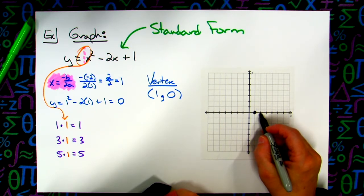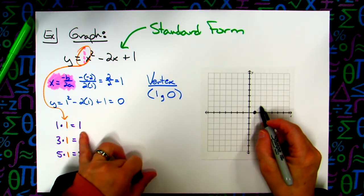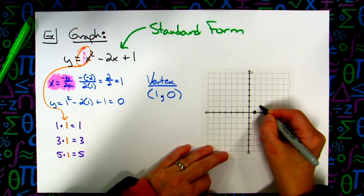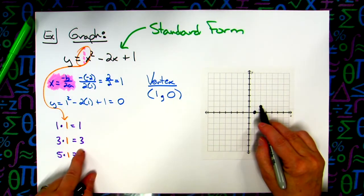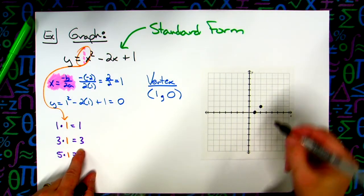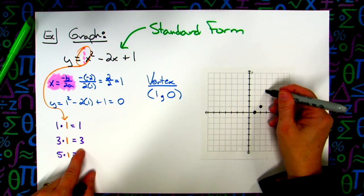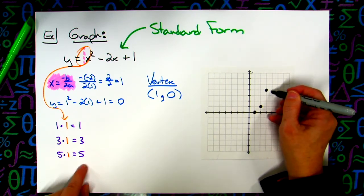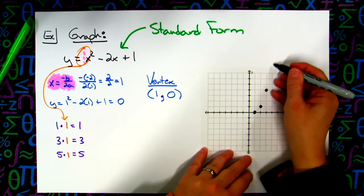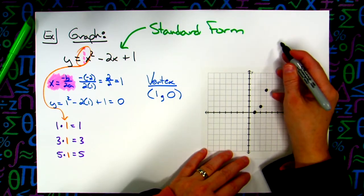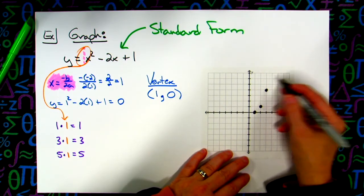So I go to the right 1, and then up 1, and put my dot. Then I go to the right 1, up 3: 1, 2, 3, put a dot. If I go to the right 1 and up 5, I'm off my graph paper. So no big deal. You may not be off yours, but I'm definitely off mine. So that's okay.